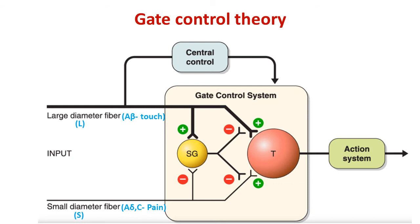The small diameter fiber or S fiber carries the pain sensation and it inhibits the SG neuron, which is inhibitory to both large and small diameter fibers. So the SG neuron is inhibited and will no longer inhibit the small diameter pain fibers or the large diameter touch fibers. As a result, pain travels undiminished to the T cell and then to the central nervous system — the gate is said to be open.